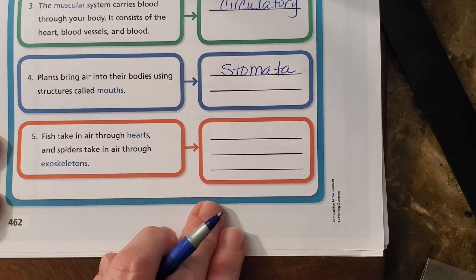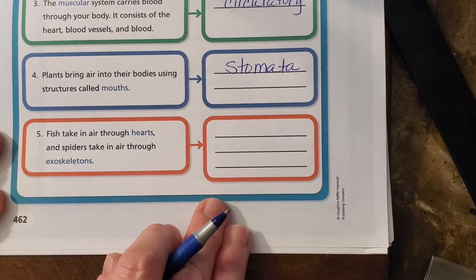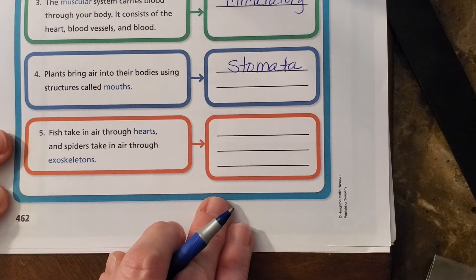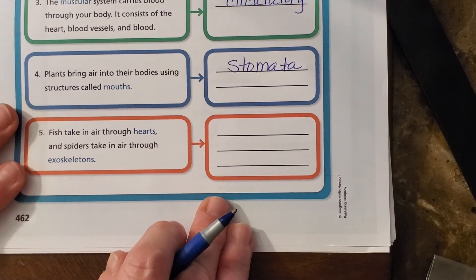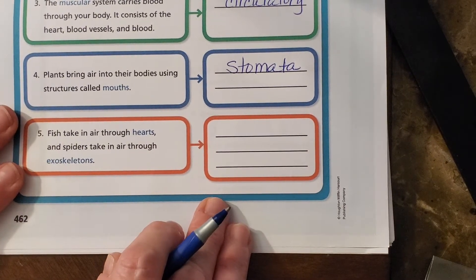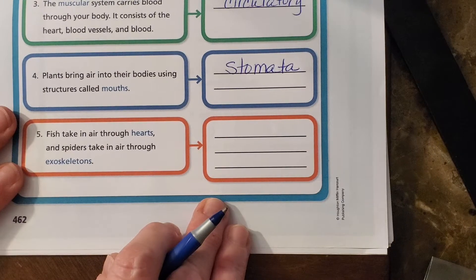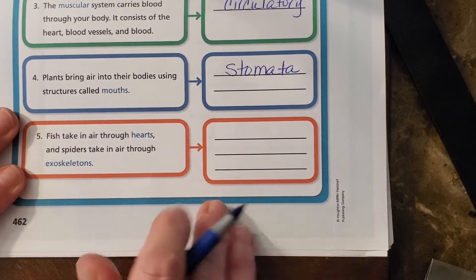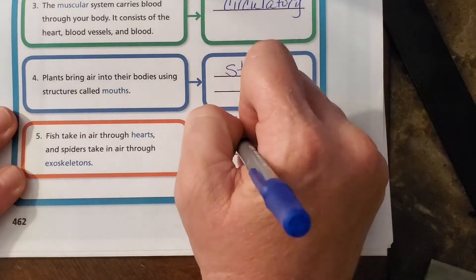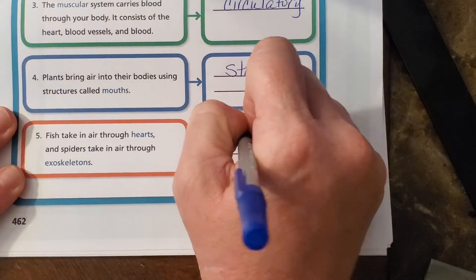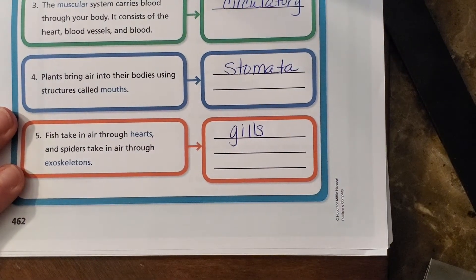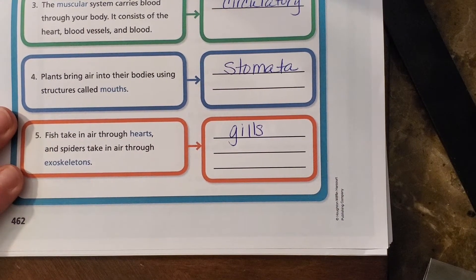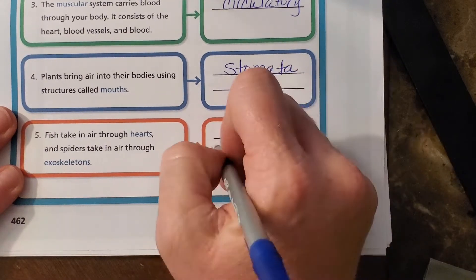And last on this page: fish take in air through hearts, and spiders take in air through exoskeletons. Well, no. Fish don't breathe through their hearts — they take in air through their gills. And spiders take in air through their book lungs.